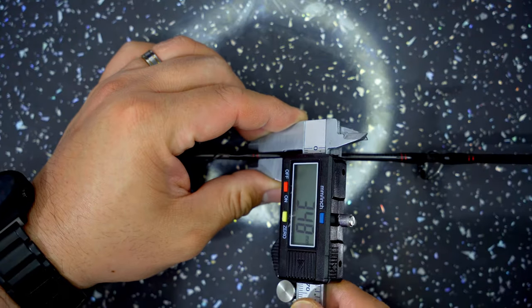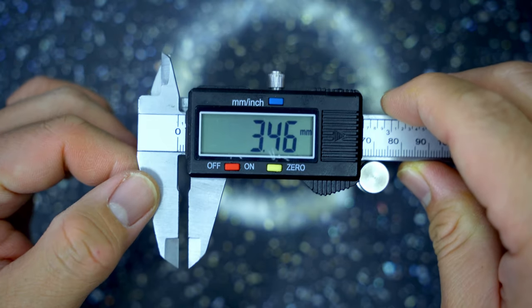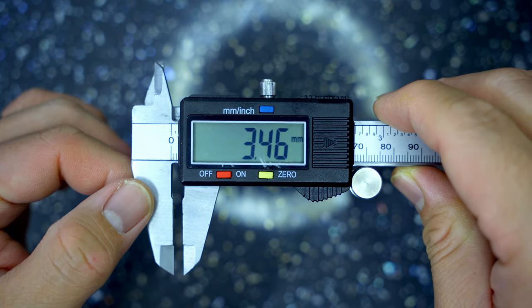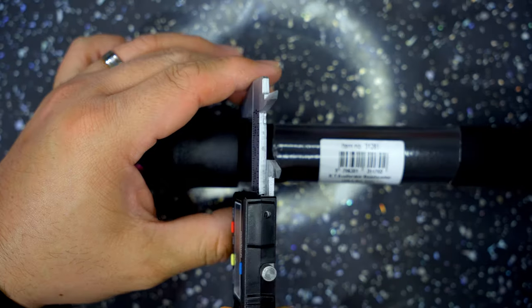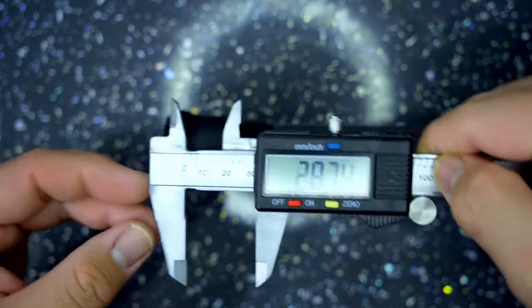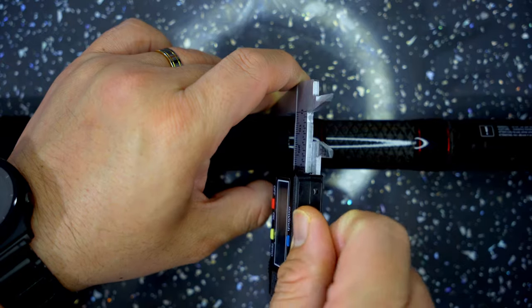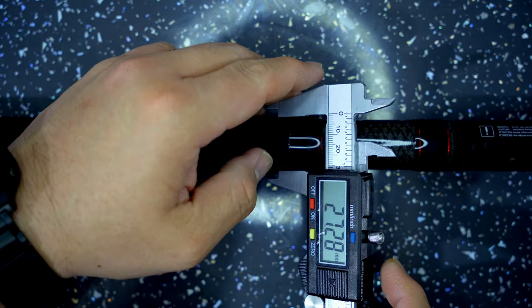The diameter of the blank just behind the tip guide measures 3.46 millimeters. The bottom section of the blank right after the rubber butt cap measures 28.74 millimeters while the top of the shrink wrap measures 27.28 millimeters in diameter.